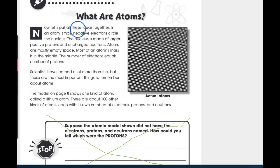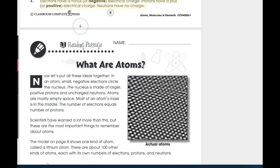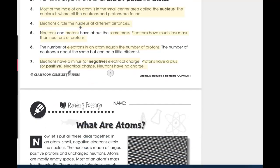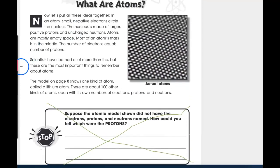Now, let's put all these ideas together. In an atom, small negative electrons circle the nucleus. The nucleus is made of larger positive protons and uncharged neutrons. Atoms are mostly empty space. Most of an atom's mass is in the middle. The number of electrons equals the number of protons. Wow, everything in this paragraph, science students, is everything that is in numbers 1 through 7. We won't do any highlighting there. Scientists have learned a lot more than this. But these are the most important things to remember about atoms.